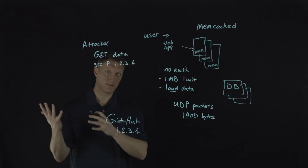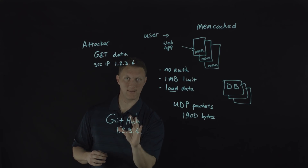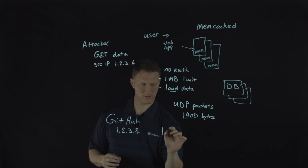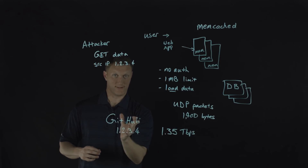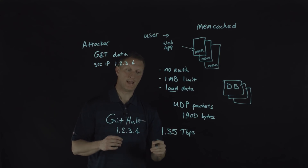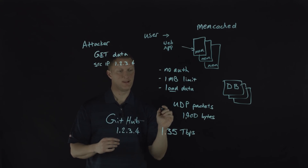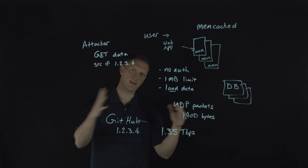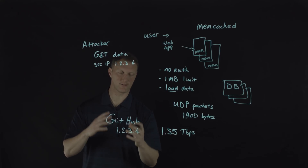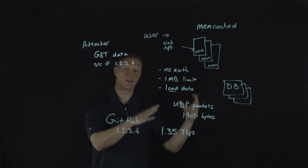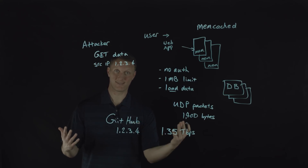What happened in the GitHub instance is the flood of data that came in was 1.35 terabits per second of traffic. That lasted for about eight minutes. The attackers settled down a little bit, then came back a few minutes later and ramped it up again — though not quite 1.35 terabits per second. After about 20 minutes, the whole thing was over, which was good news for GitHub.